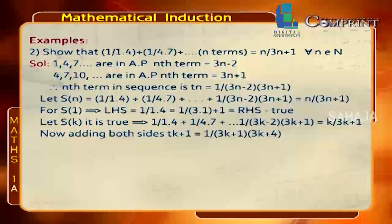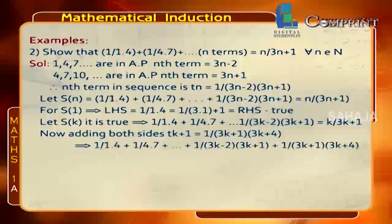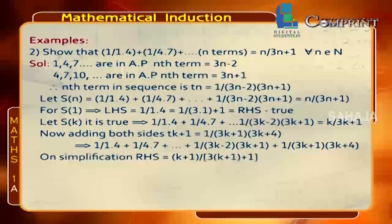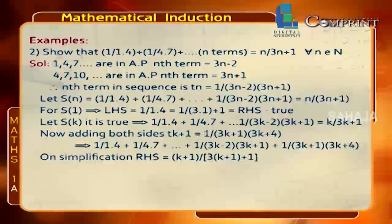Adding the (k+1)th term 1/[(3k+1)(3k+4)] to both sides: LHS becomes the sum up to the (k+1)th term. On the RHS: k/(3k+1) + 1/[(3k+1)(3k+4)]. On simplification, RHS becomes (k+1)/[3(k+1)+1], which is true for S(k+1).